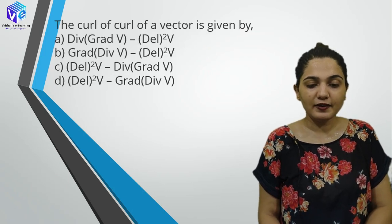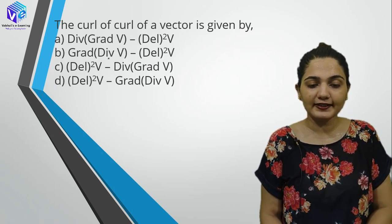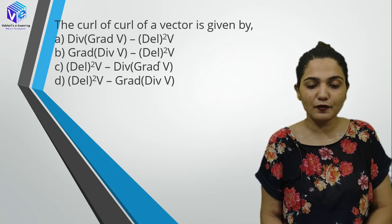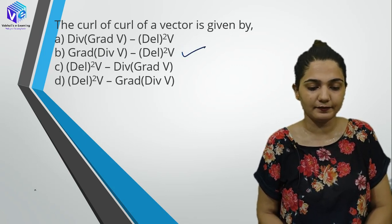The curl of curl of a vector: curl(curl V) = gradient of divergence of V minus del²V. This is a formula you should remember.